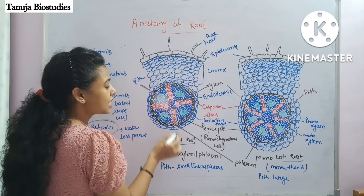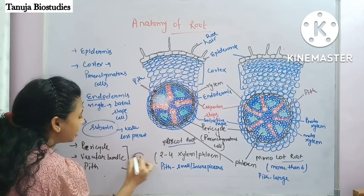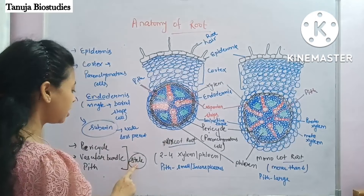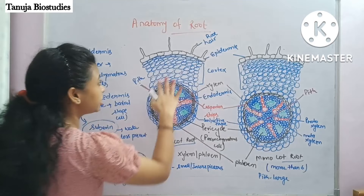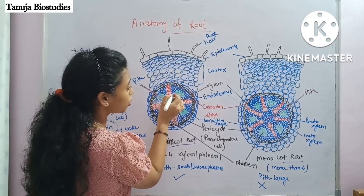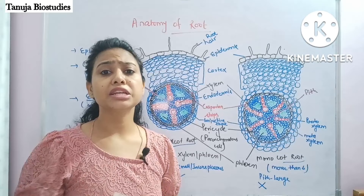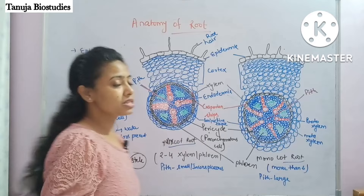Regarding secondary growth: secondary growth occurs in dicot roots but does not occur in monocot roots. In dicots, a cambium forms between the xylem and phloem, enabling secondary growth. We will discuss the details of secondary growth further later on.